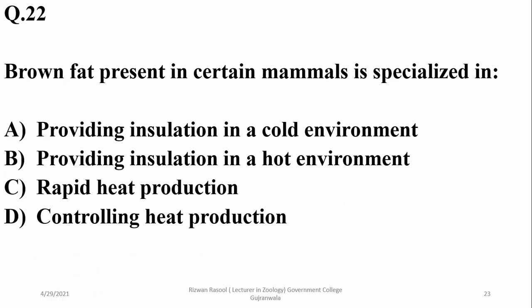Brown fat, present in certain mammals, is specialized in rapid heat production because it is rich in iron. The characteristic brown color is due to iron or cytochrome enzymes, which are involved in rapid oxidation of substances and thus rapid release of energy. So Charlie is the answer.